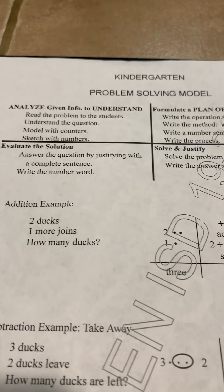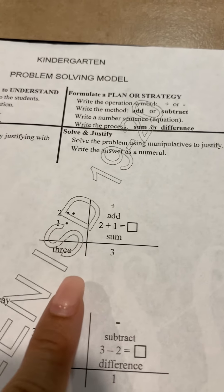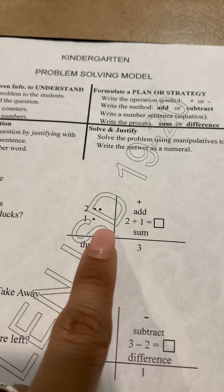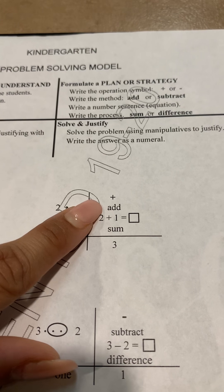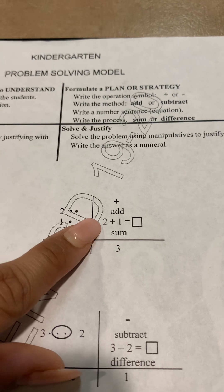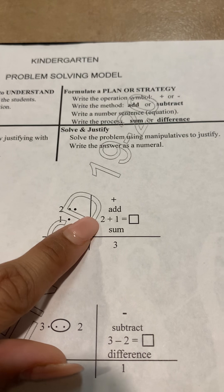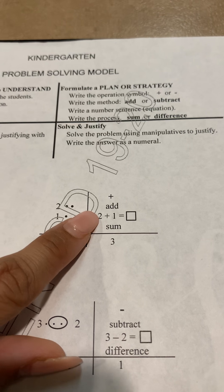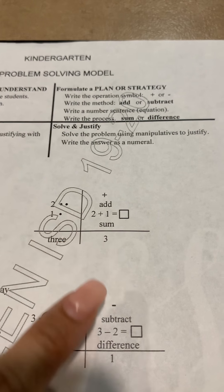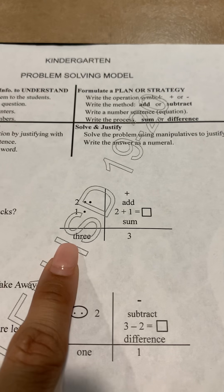Here we have an addition problem: two ducks, one more joins — how many ducks? We put two dots for the two ducks and one dot for the one joining. We formulate: the operation is the plus sign, the method is add, and the number sentence is two plus one equals — leaving the solution box blank. The process is finding the sum. We solve: two plus one equals three. Then we write the number word.